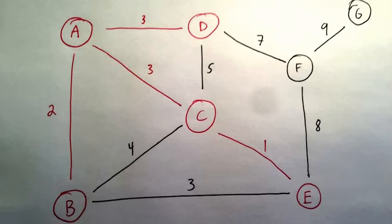Notice the next smallest edge is BE with a weight of 3. But this edge connects two nodes that are already in the same tree, so it will not be chosen.